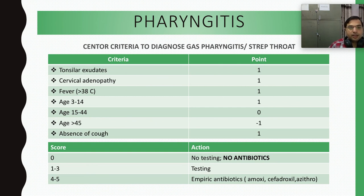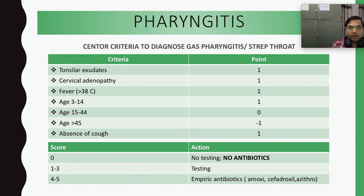We give one point for cervical adenopathy, one point for fever greater than 38°C, and age is very important — in childhood only, this bacteria infects more, as adults have already developed antibodies. Age 3 to 14 years scores one point; age 15 to 44 years scores zero points; age greater than 45 years scores minus one point.